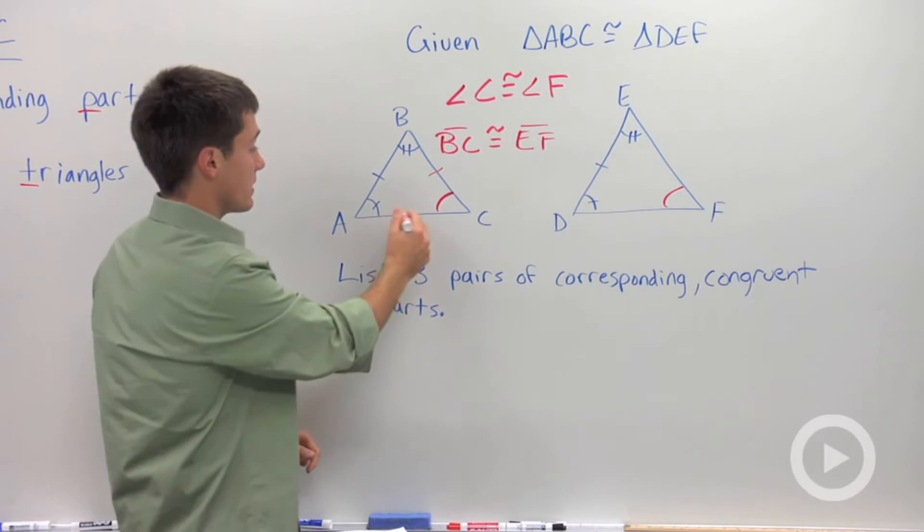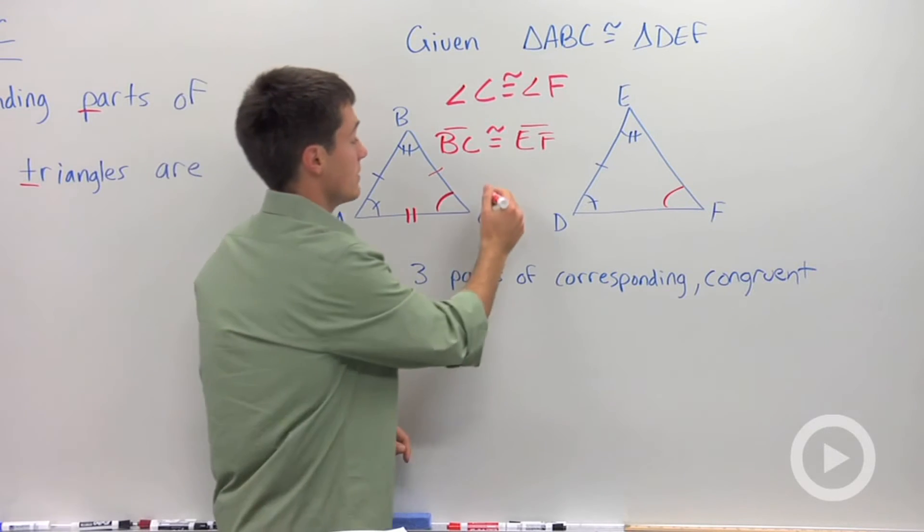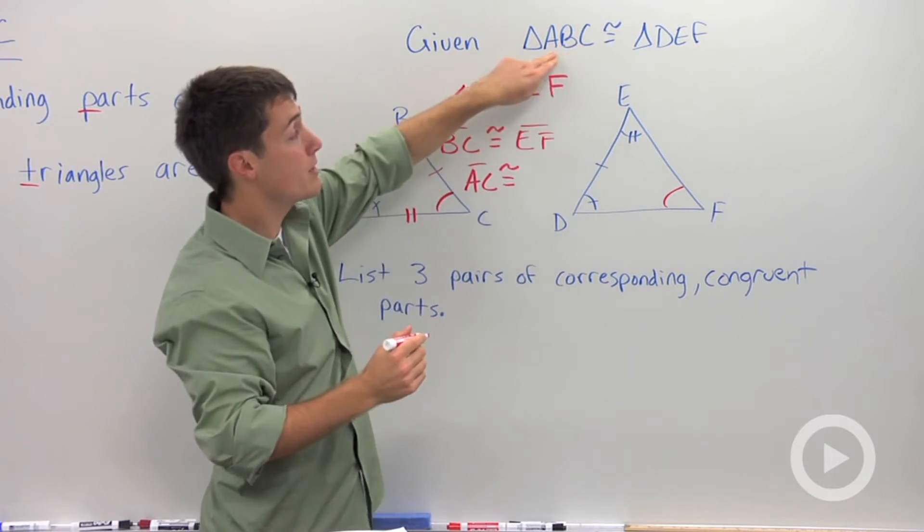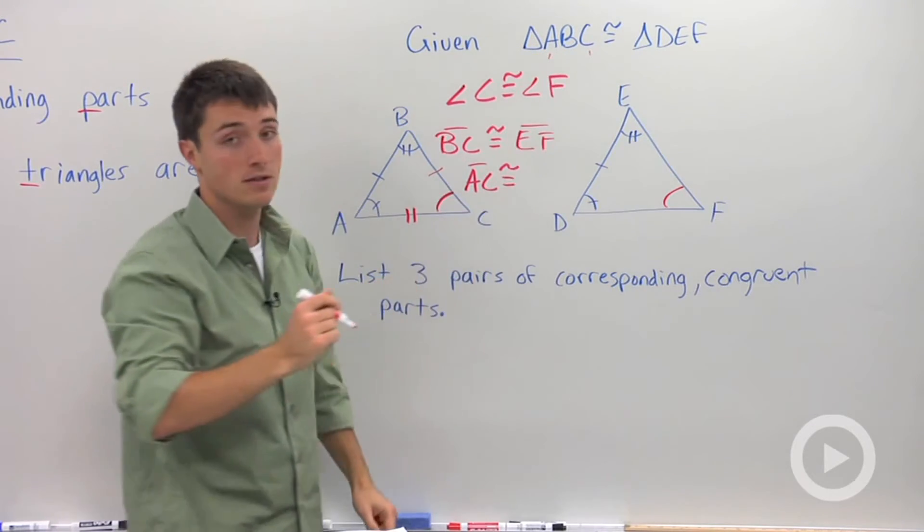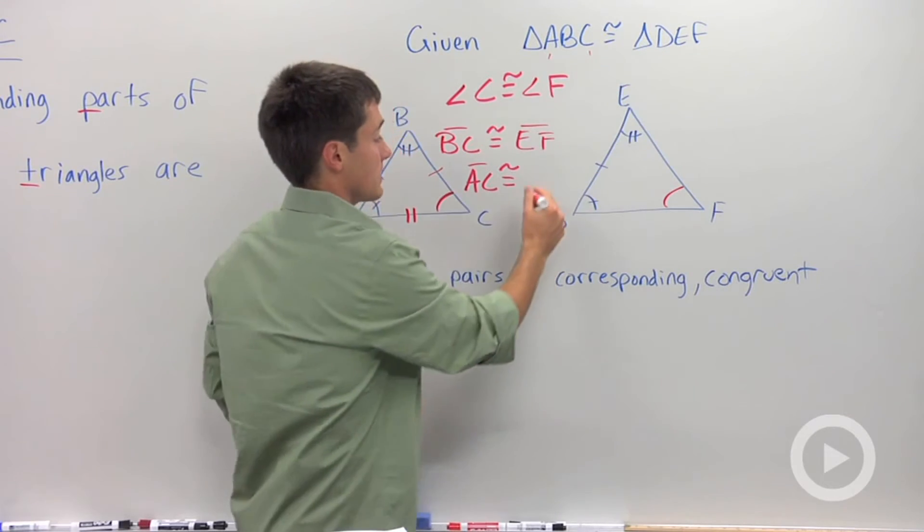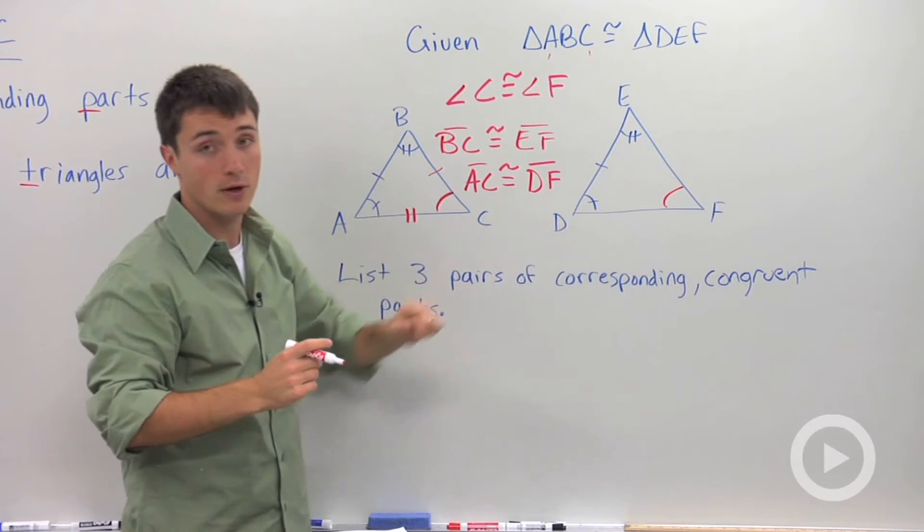And last, we could look at this line segment AC, its corresponding line segment. In the other triangle, if I just look at these letters, A is the first letter, C is the last letter. So looking at this one, D is the first, F is the last. I could also look at the drawing to verify that's true.